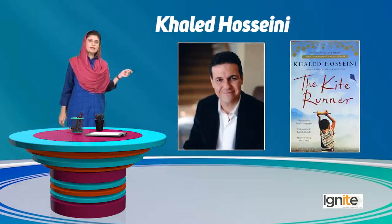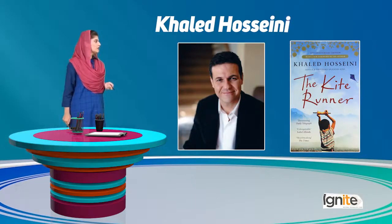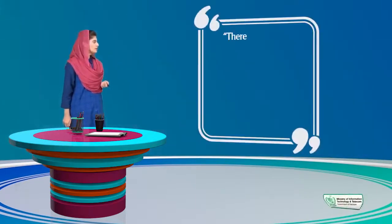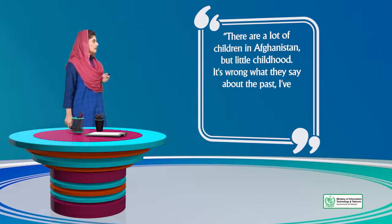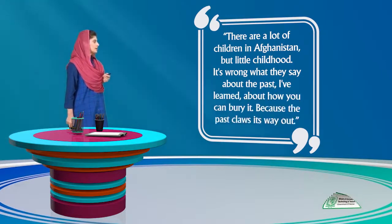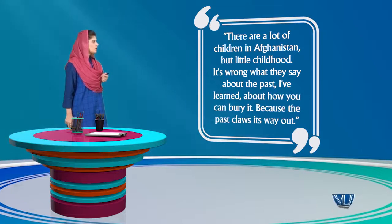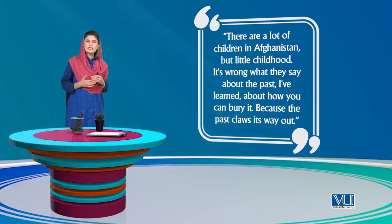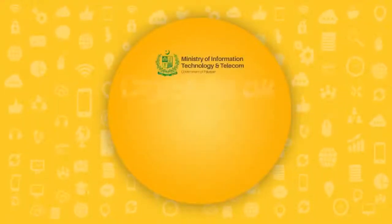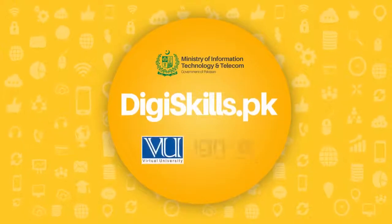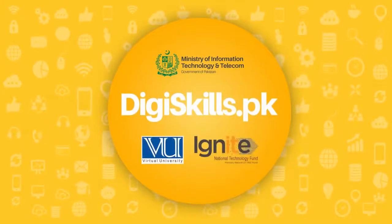Khalid Hosseini's The Kite Runner, about Afghanistan, has a very different tone. Look at this passage: 'There are a lot of children in Afghanistan, but little childhood. It's wrong what they say about the past. I've learned about how you can bury it — because the past claws its way out.' This is serious, full of pathos, and creates an entirely different tone from the previous examples.